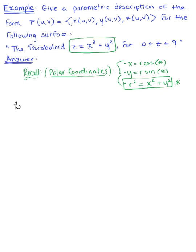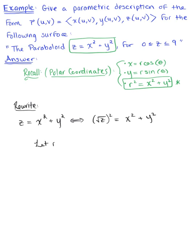Let's rewrite our paraboloid to match this formula. We have z equals x squared plus y squared, which is equivalent to saying the square root of z squared equals x squared plus y squared. So if we let the radius be the square root of z, then r squared equals x squared plus y squared, meaning x equals the square root of z times cosine of theta, and y equals the square root of z times sine of theta.